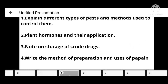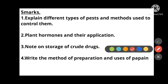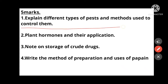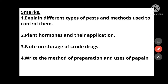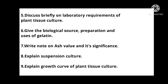Now the very important five-mark questions. First: Explain different types of pests and methods used to control them. Second: Write a note on plant hormones and their applications. Third: Write a note on storage of crude drugs. Fourth: Write the method of preparation and uses of terpane.